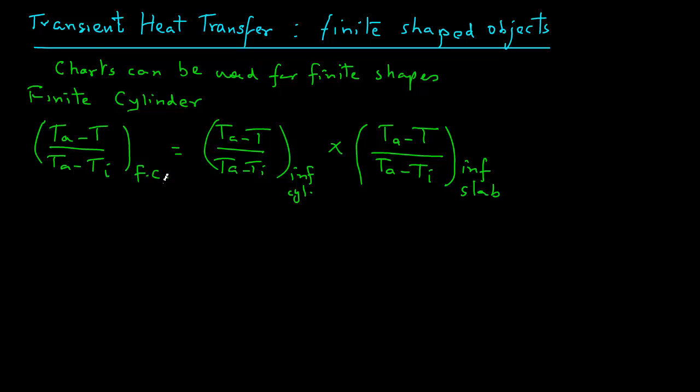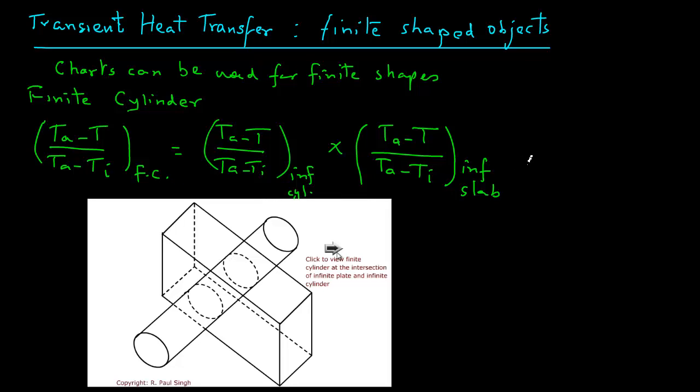This is illustrated in this diagram that shows a finite cylinder that is part of an infinite cylinder and part of an infinite slab. What does this really mean?